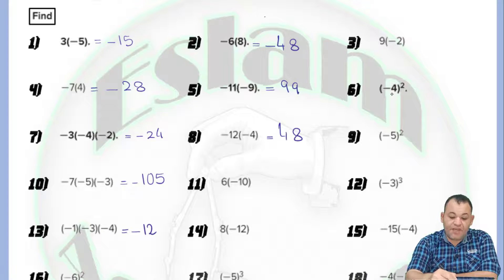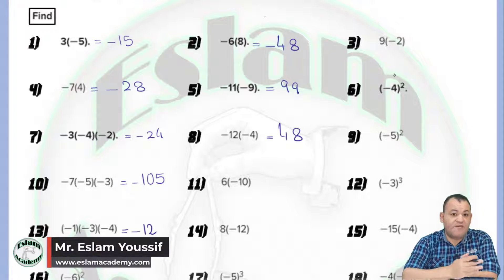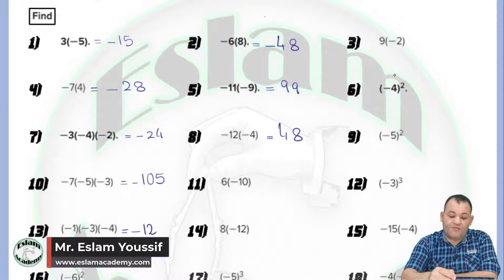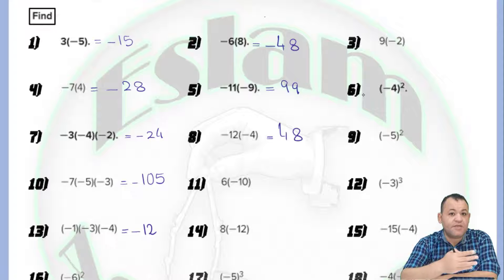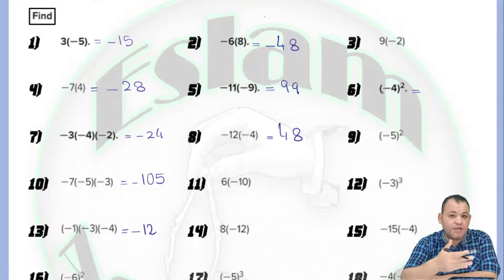In question number 6, we have negative 4 to the power 2. The meaning of the power is that we repeat the same number in multiplication according to the power. If the power is 2, it means negative 4 times negative 4. If the power is 3, negative 4 is repeated 3 times in multiplication. If the number inside the bracket is negative and the power is even, the answer will be positive, because negative times negative is positive. 4 to the power 2 means 4 times 4 equals 16.